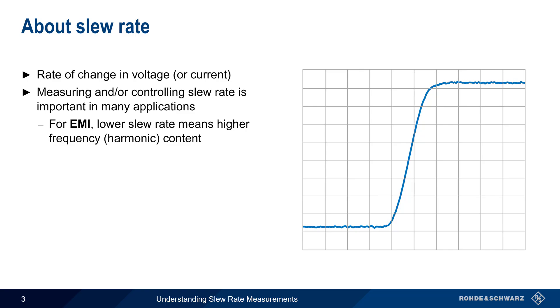For example, higher slew rates can lead to greater electromagnetic interference, since fast rise times create higher frequency harmonic content.